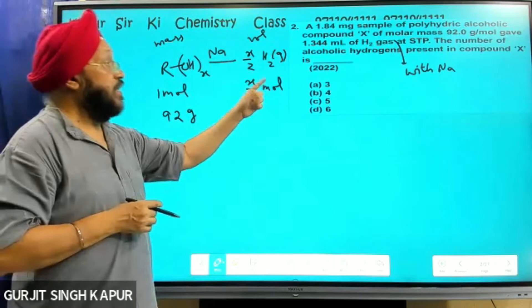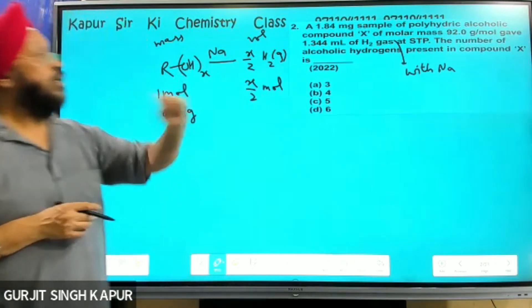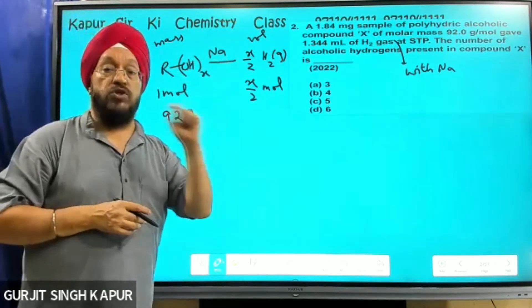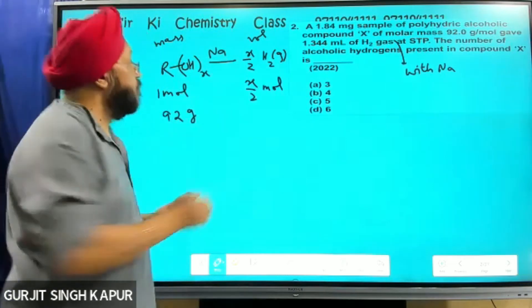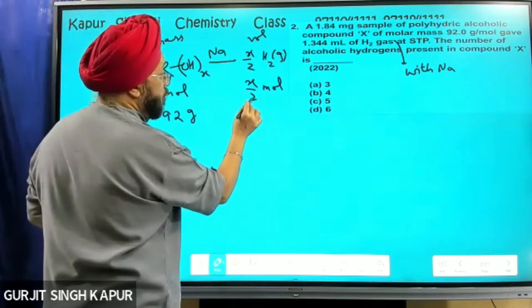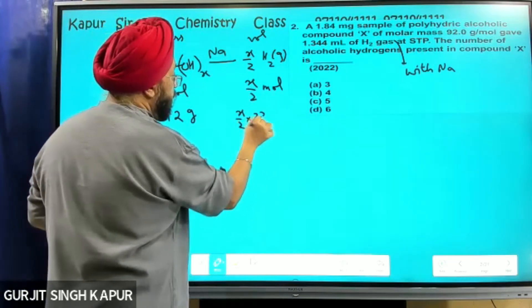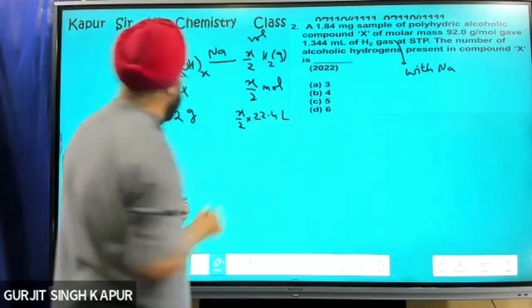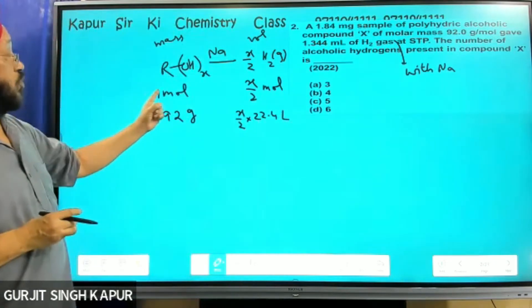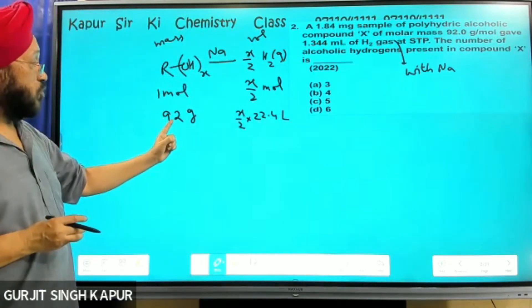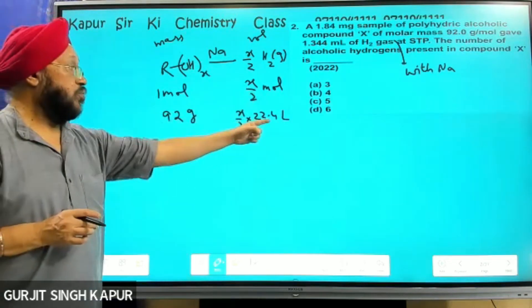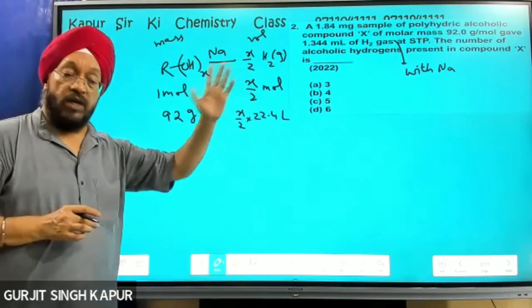In terms of volume, volume of 1 mole is 22.4 liters. So x/2 into 22.4. So 1 mole corresponds to... x/2 moles corresponds to x/2 times 22.4.